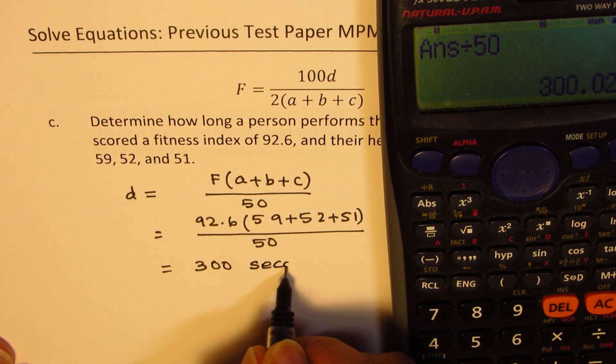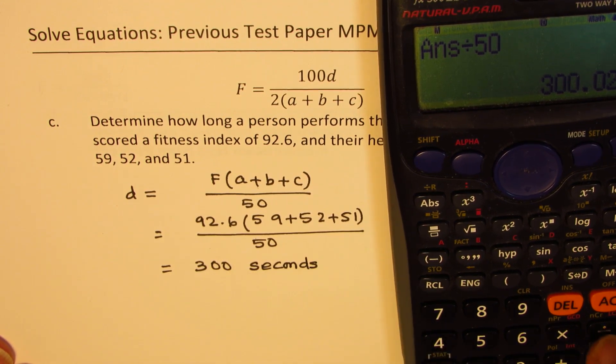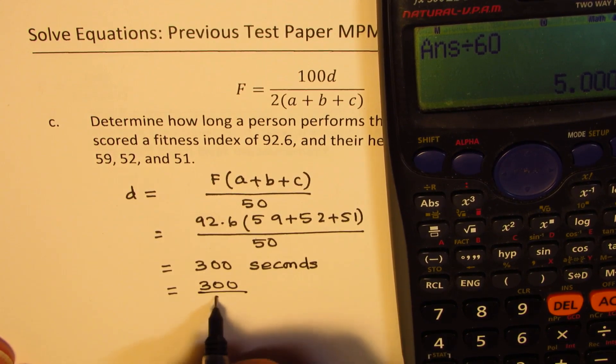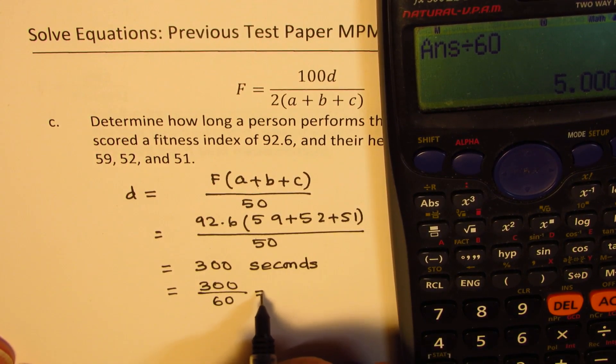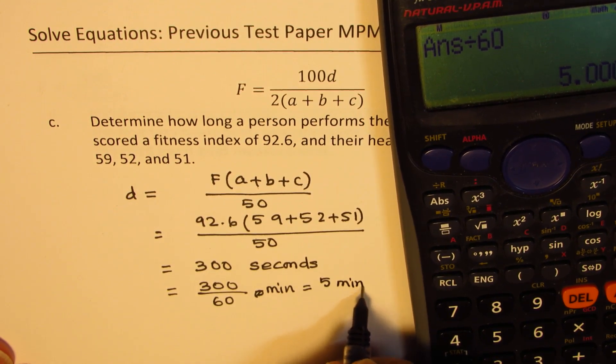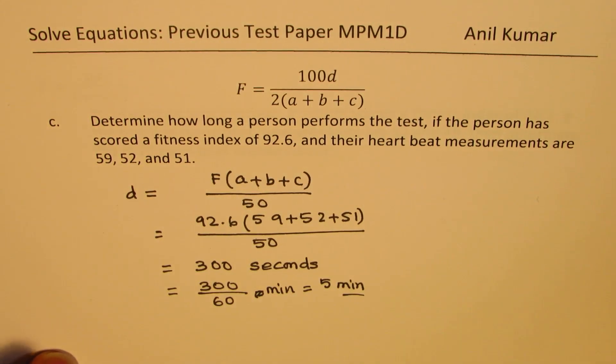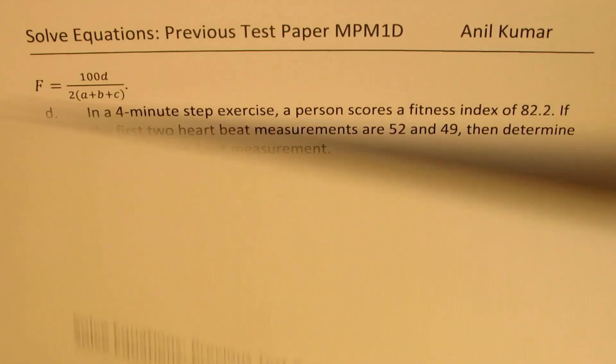So it is in seconds. We can actually divide this by 60 to get time in minutes, which is five minutes, which is 300 by 60. So the value of D is five minutes.